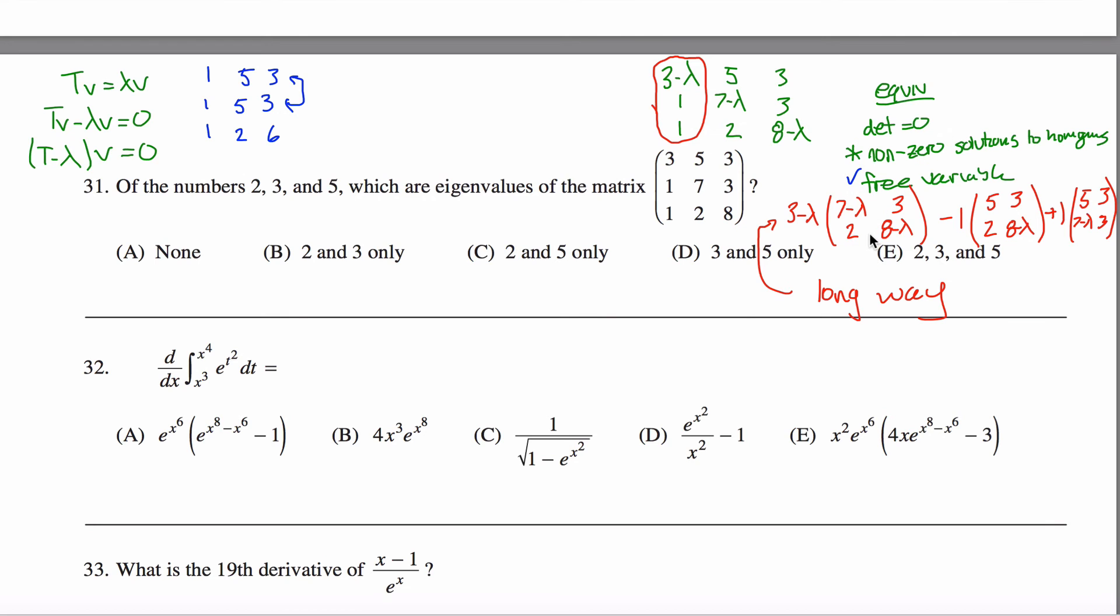This whole row right here would go away. I'd end up with a free variable here. So because I have a free variable, that means it has non-zero solutions to the homogenous matrix. So what that means is that 2 is in fact an eigenvalue.